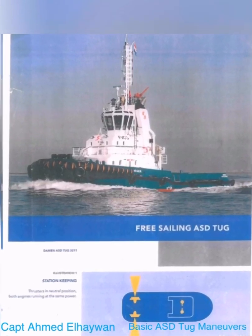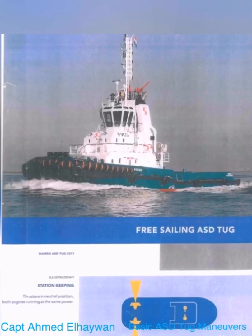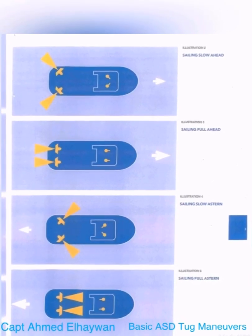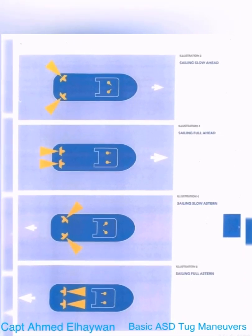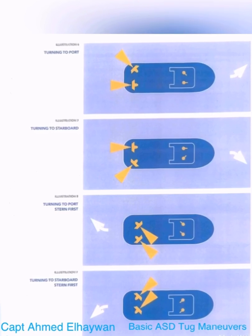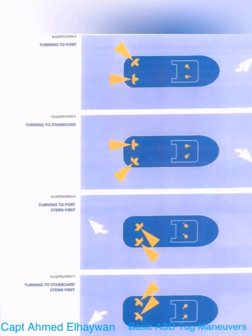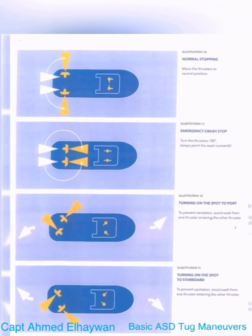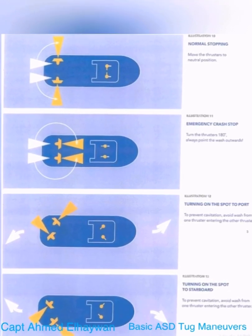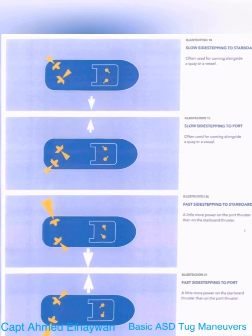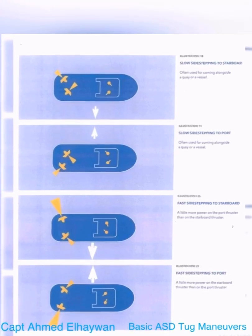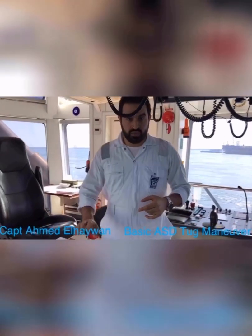Today we'll talk about maneuvers for ASD tugboats. We'll start from moving ahead and stop, and moving astern. After that we'll speak about turning to port, turning to starboard, slow to port, slow to starboard. After that, fast to port and fast to starboard.